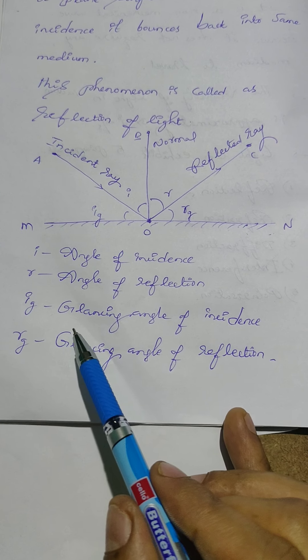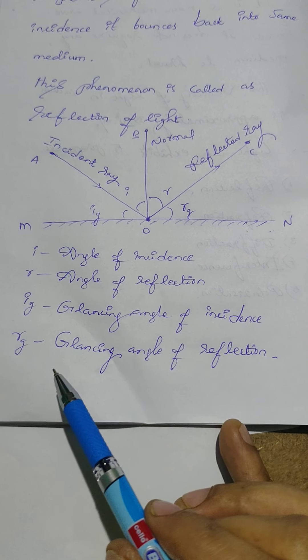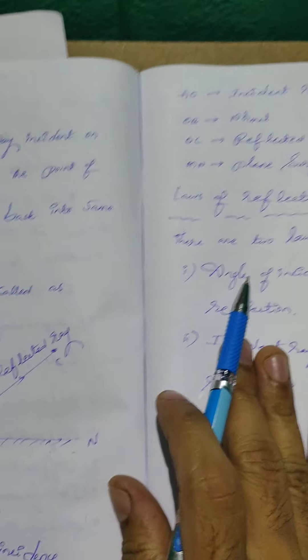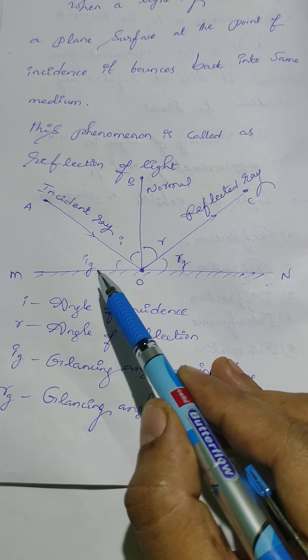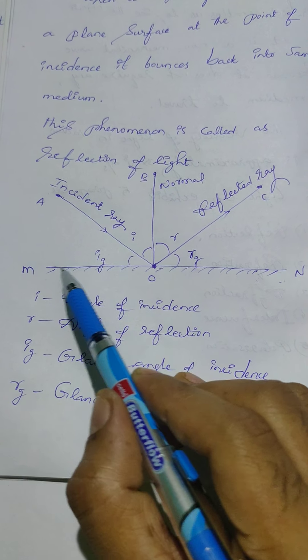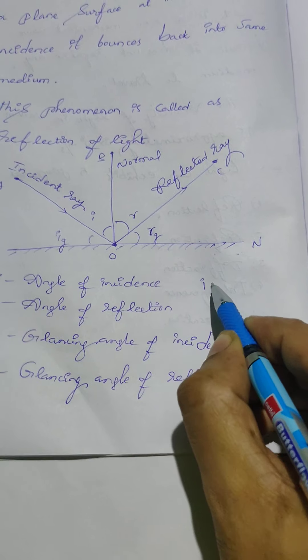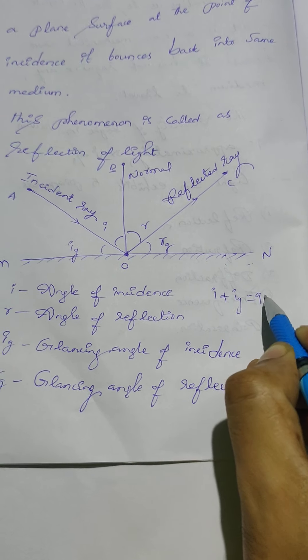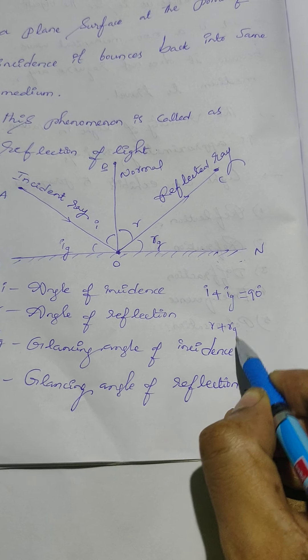And IG means glancing angle of incidence and RG means glancing angle of reflection. So from this diagram we can write I plus IG equals 90 degrees, because normal makes 90 degrees with a plane surface. So here we can write I plus IG is equal to 90 degrees.